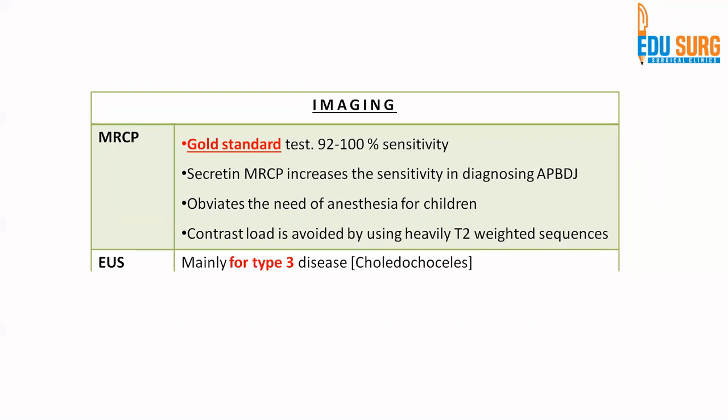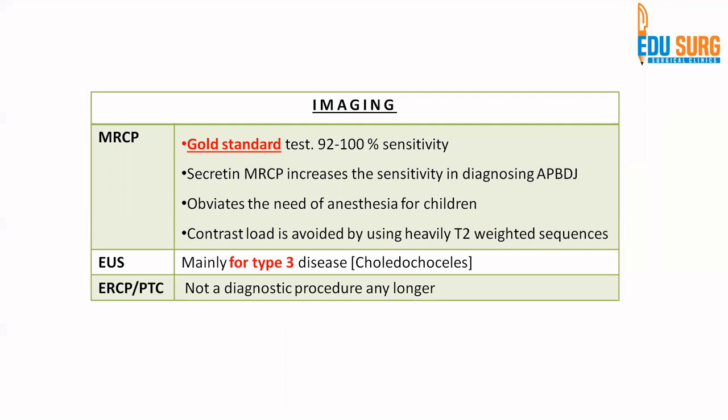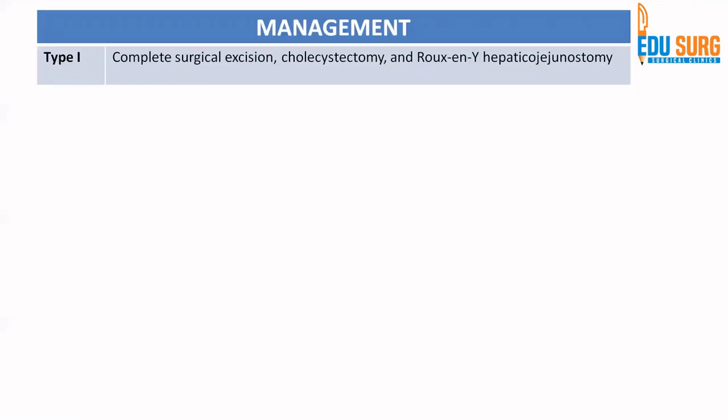Endoscopic ultrasound is predominantly helpful in Type 3 disease, that is choledochocele. ERCP and PTC — endoscopic retrograde cholangiopancreatography and percutaneous transhepatic cholangiography — are no longer primarily diagnostic procedures, as the imaging modalities discussed, in combination, can give the diagnosis of choledocal cysts in almost all cases.